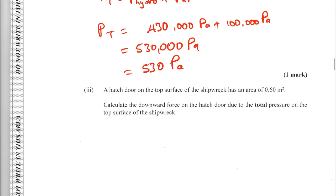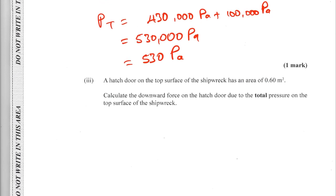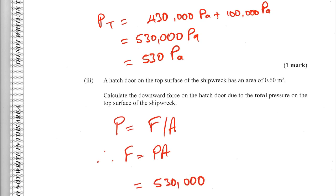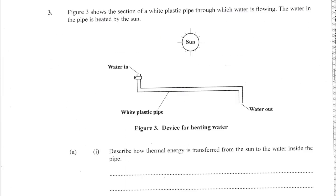A hatch door on top of the shipwreck has an area of 0.60 m². We need to calculate the downward force on the hatch door due to the total pressure. Using F = P × A, with total pressure 530,000 Pa and area 0.60 m², we get force = 530,000 × 0.60 = 318,000 newtons.